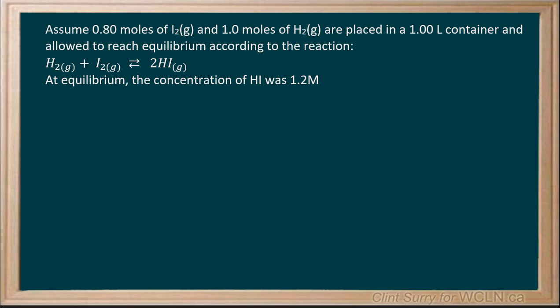Unit 3, the equilibrium intro. Here we're asked to assume that 0.80 moles of iodine and 1.0 moles of hydrogen gas are placed in a 1.00 liter container and allowed to reach equilibrium according to the reaction.